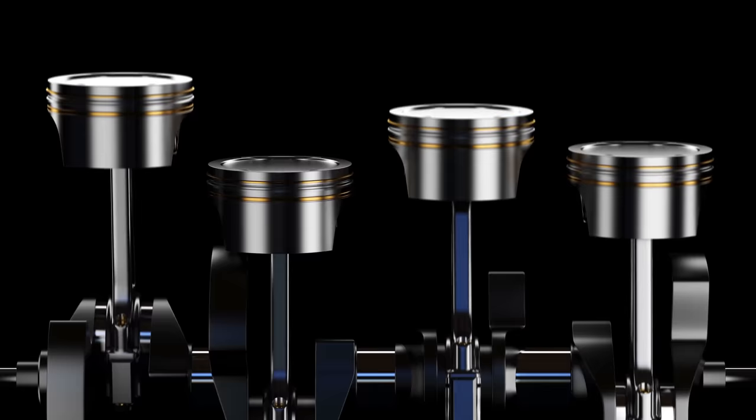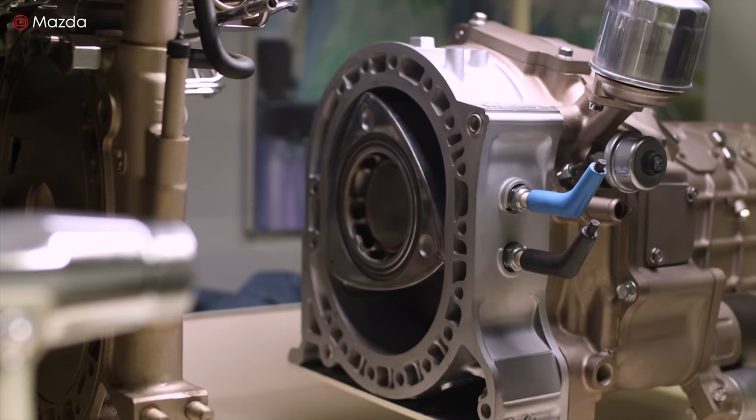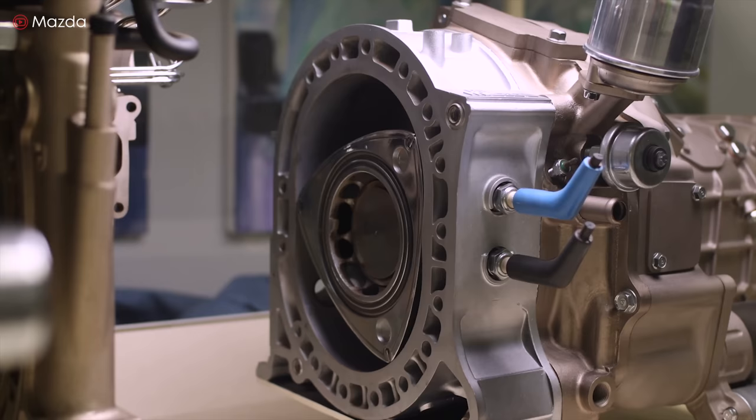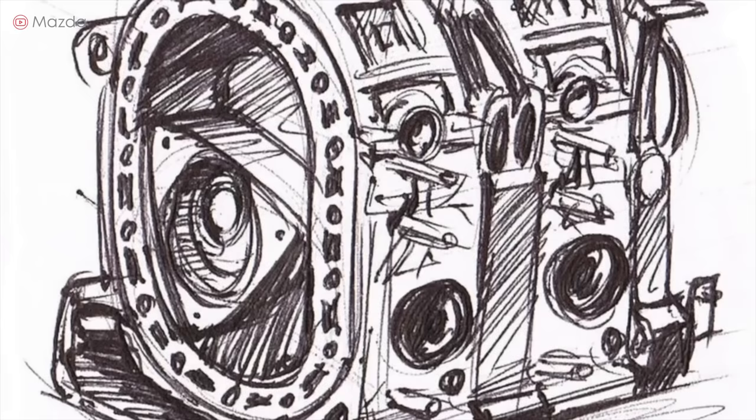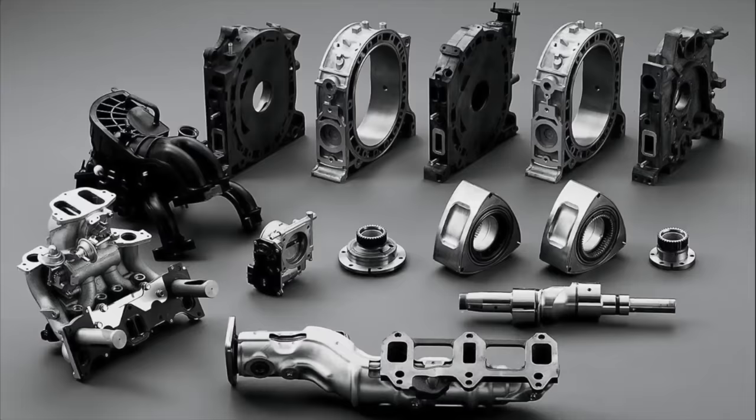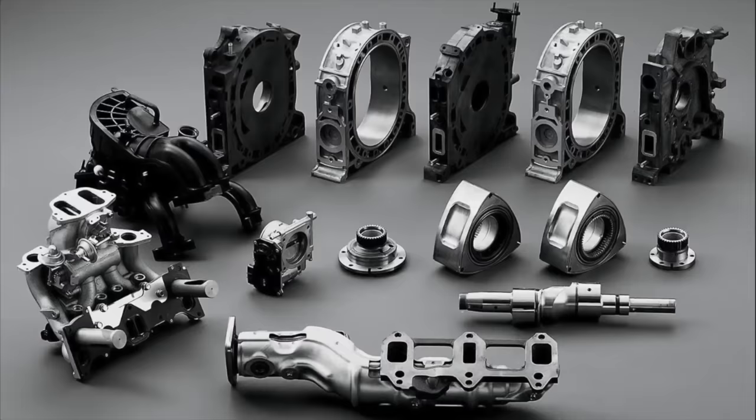The rotary engine is often called a Wankel engine or Wankel rotary engine. That is because it was originally conceived and developed by the German engineer and inventor Felix Wankel. Wankel received his first patent for the engine in 1929. After World War II, Wankel worked at NSU Motorwerken, a German company that produced motorcycles. He worked under Walter Früge.